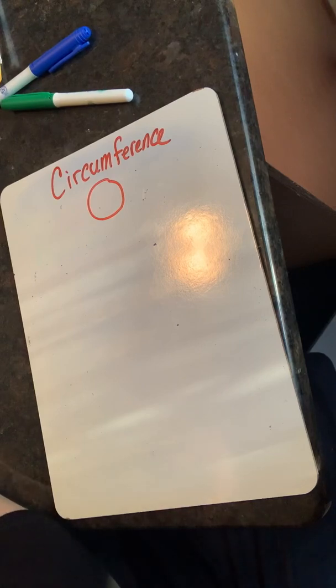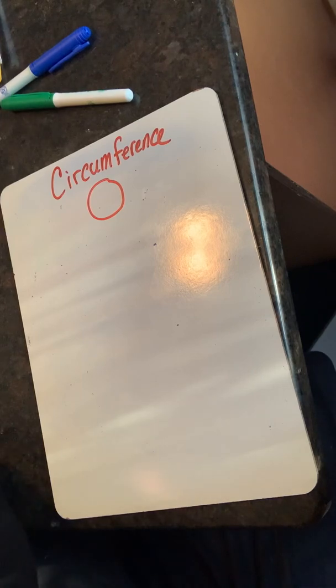But because circles do not have straight sides, we can't do that to find the distance around our circles. Pero porque los círculos no tienen lados rectos, no podemos hacer eso para encontrar la distancia alrededor de nuestros círculos.